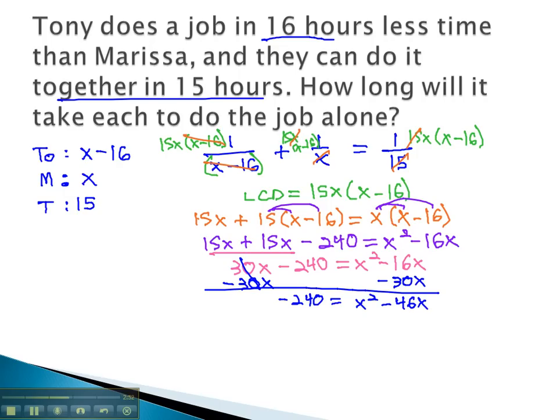To complete the square, we take half of our b term, the negative 46, and we square it. This would be negative 23 squared, and negative 23 squared is 529. We'll add 529 to both sides. When we do, we end up with 289 equals... it will factor to a perfect square on the right side, x minus 23 squared.